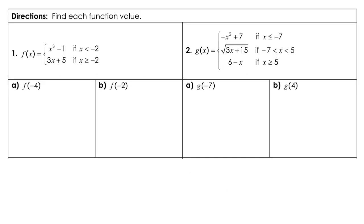For number 1, we will need to plug in negative 4 into the top function because that would be where we have this inequality to be true. We substitute in negative 4 raised to the 3rd power minus 1 — that's negative 64 minus 1 — so we get negative 65.